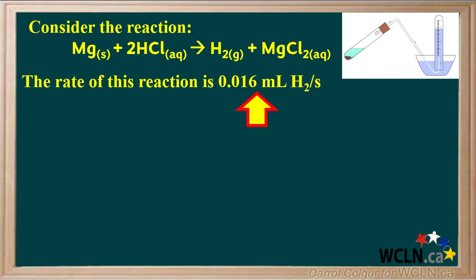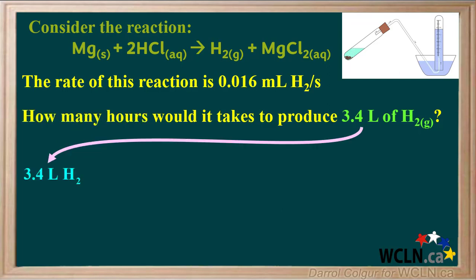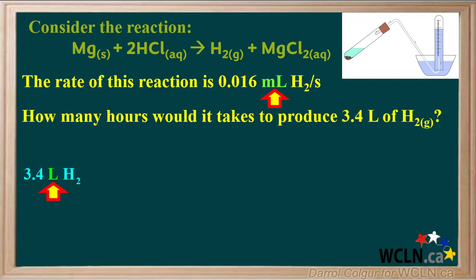We'll do one more problem. We're given the same reaction with magnesium and hydrochloric acid, and we're given that the rate of this reaction is 0.016 milliliters of hydrogen per second. We're asked how many hours it would take to produce 3.4 liters of hydrogen gas at this rate. We can start by writing down the given quantity with the single unit: 3.4 liters of hydrogen. The 3.4 is in liters, but the volume unit in the rate is in milliliters, so we need to change liters of hydrogen to milliliters of hydrogen.